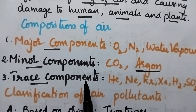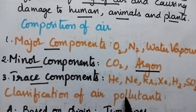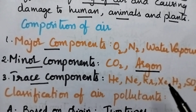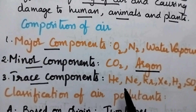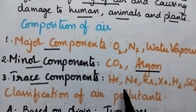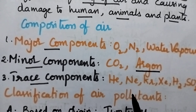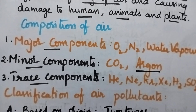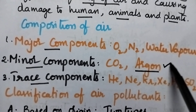From this composition of air, it is very clear that if there is any change in this composition due to the presence of other substances, then that is called air pollution, and it definitely affects human beings, animals and plants. The inert gas present in the air with the highest concentration is argon.